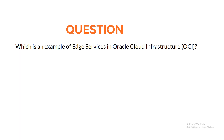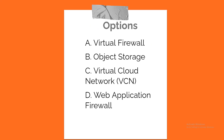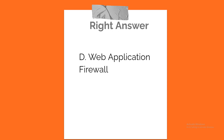Question. Which is an example of edge services in Oracle Cloud Infrastructure? A. Virtual Firewall. B. Object Storage. C. Virtual Cloud Network (VCN). D. Web Application Firewall. Correct answer: D. Web Application Firewall.